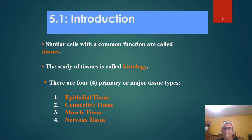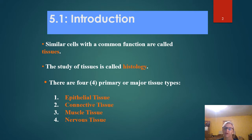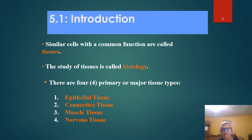There are four primary or major types of tissues: epithelial, connective, muscle, and nervous, and we're going to look at all of those. We'll have an introduction to tissues in general and then look at epithelial in this presentation. Part two is going to be connective, and part three is going to be muscle and nervous tissue.